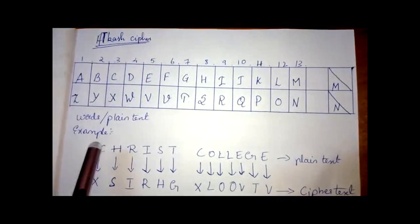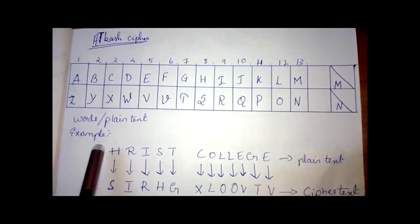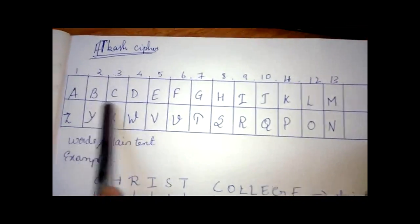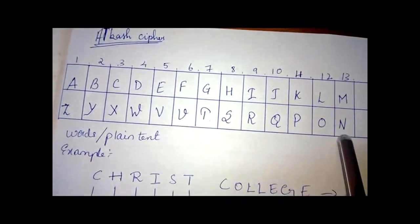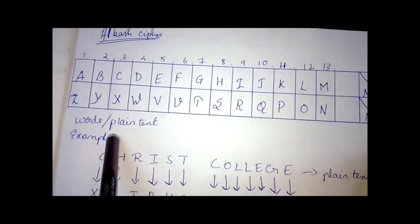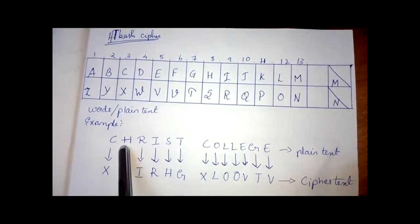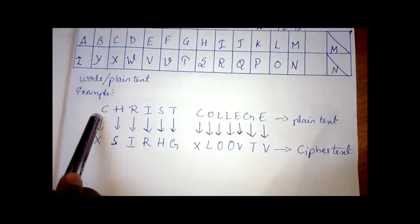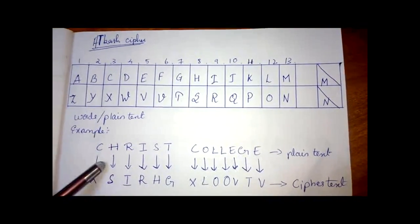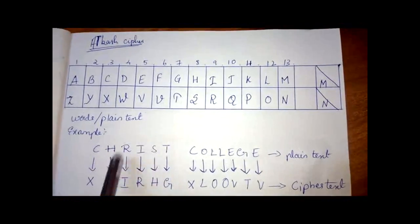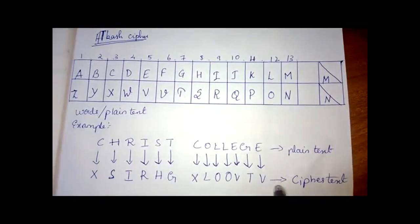Atbash cipher. Now we all know there are 26 alphabets. Now they split into two parts. The first 13 alphabets are written on the top and the other 13 are written at the bottom. Now to convert it into a cipher text, the sender and receiver will have the same format. Now let us take an example. Christ College. Now C, the corresponding value is X. As you can see that. And now for H, it is S.